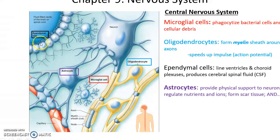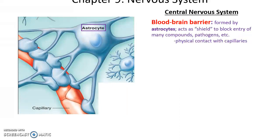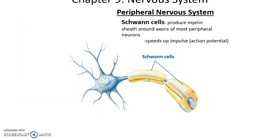You have sheets of ependymal cells. Ependymal cells line the ventricles in the brain and produce cerebrospinal fluid. And finally, we have astrocytes — the most dynamic of the glial cells. Astrocytes provide physical support to neurons, help regulate the nutrients and ions that enter the nervous tissue, can form scar tissue to replace damaged neurons, and form the blood-brain barrier. The processes of the astrocytes wrap around the capillaries in the brain and spinal cord, acting as a shield that limits what can enter the nervous tissue — specifically to limit pathogens able to get into the brain and spinal cord.